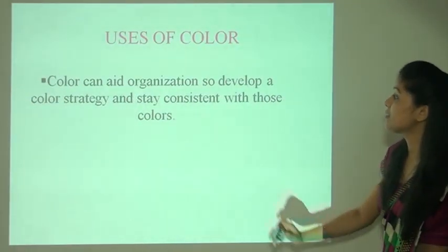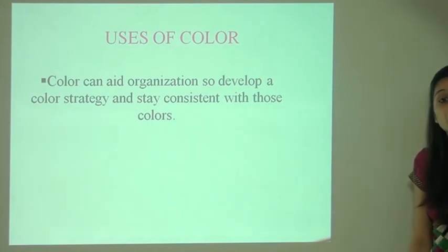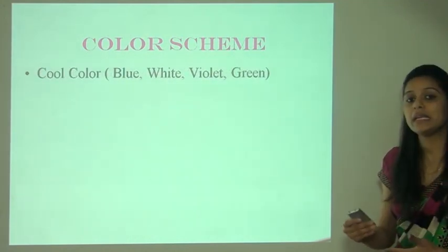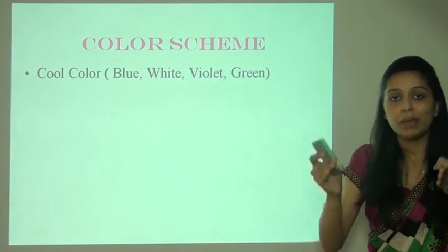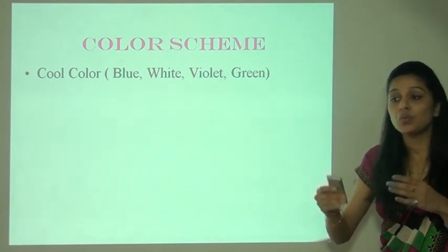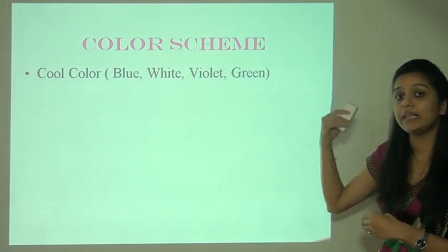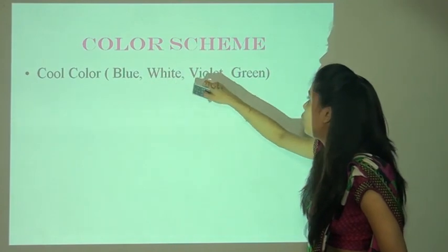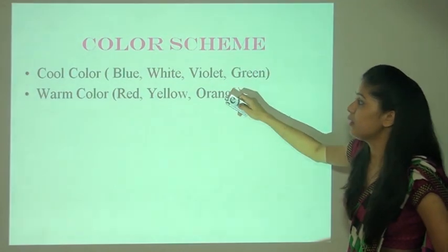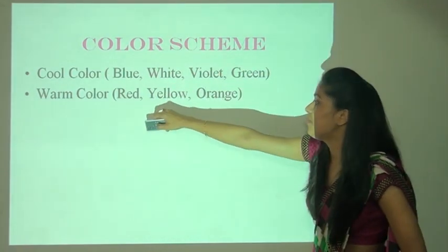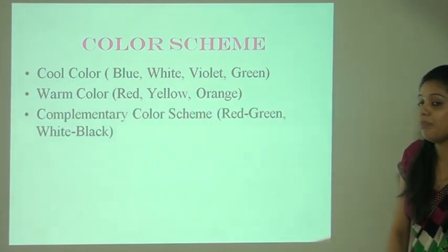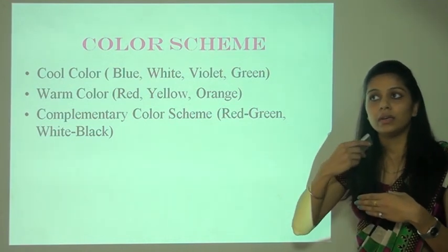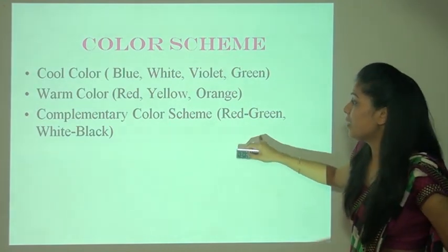Mixing primary and secondary colors creates tertiary colors: red-violet, blue-violet, yellow-green, yellow-orange, red-orange. Colors can add organization — develop a color strategy and stay consistent. Color can give emphasis and create hierarchy. There are primary, secondary, and tertiary color schemes. We need to know how to mix and match them, and color knowledge is essential in fashion designing. Complementary color scheme — koi bhi opposite color, jaisi red ka opposite is green, black ka opposite is white, orange ka opposite is yellow.